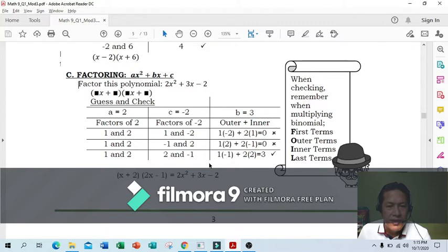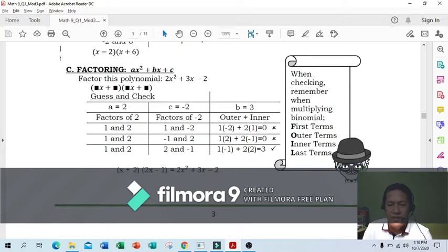So these four go in the box: 1 and negative 1. Place 1 here, outer, and negative 1 outside. Inner: 2 and 2 inside. Multiply and distribute: x times 2x gives 2x squared. Last, 2 times negative 1 is negative 2. How do we get 3x in the middle term? 2 times 2x is 4x, x times negative 1 is negative x, so 4x minus x gives 3x.